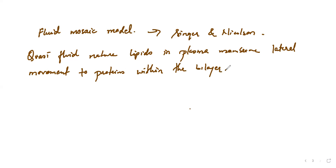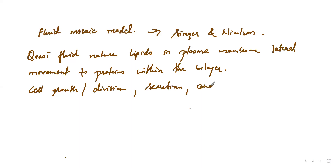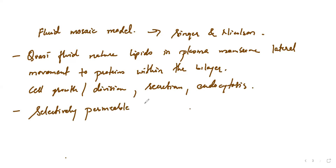The fluid mosaic model also explains that the quasi-fluid nature of the membrane contributes to cell growth, cell division, secretion, and endocytosis. The plasma membrane is selectively permeable, meaning only certain substances can move across it.